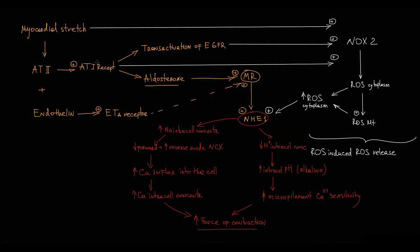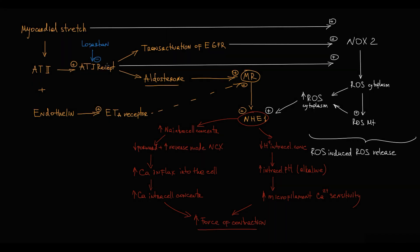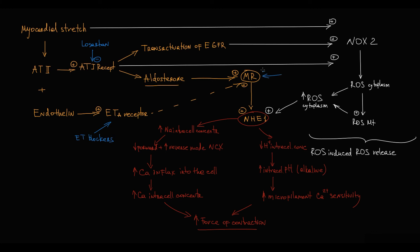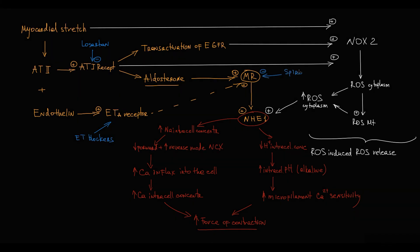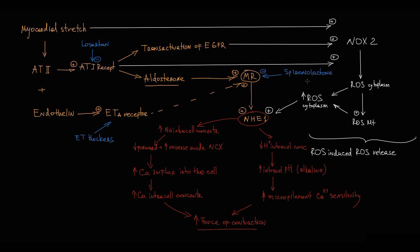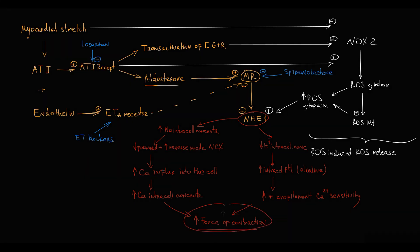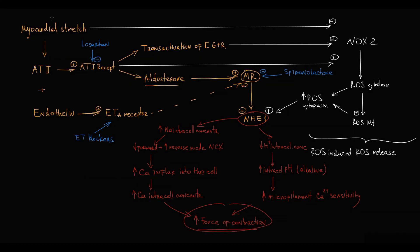By the way, the Anrep effect can be blocked by three major drugs: by angiotensin-1 receptor antagonists such as losartan, by endothelin receptor blockers, and by mineralocorticoid receptor antagonists such as spironolactone. So this slow and prolonged increase in force of contraction after the initial rapid myocardial stretch is what we call the Anrep effect.